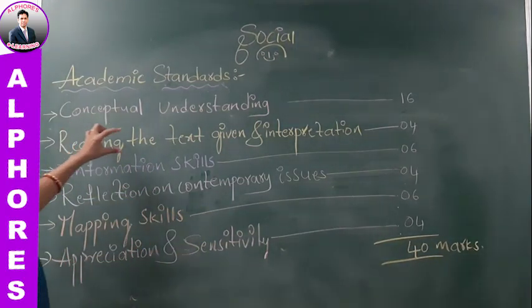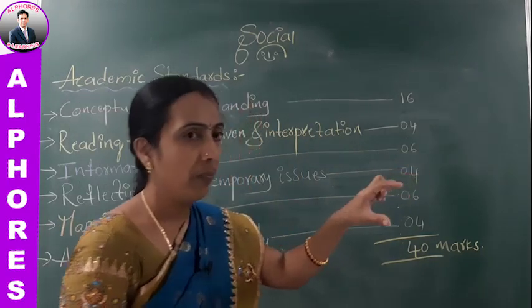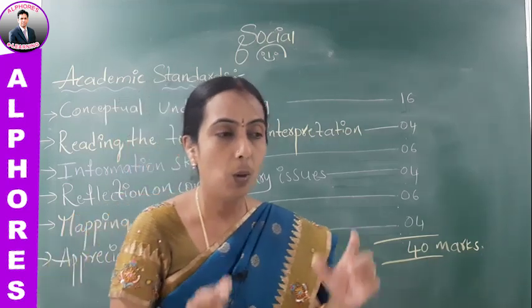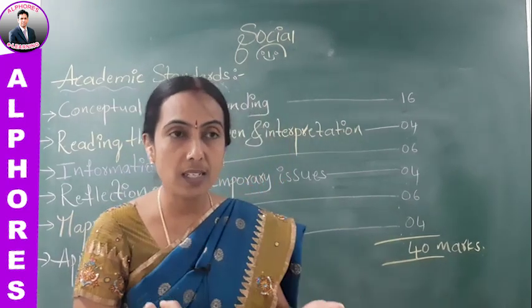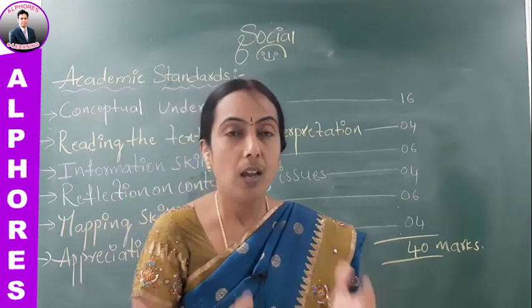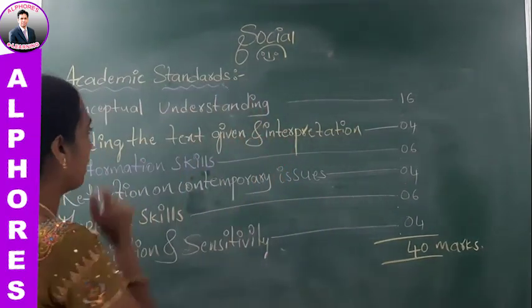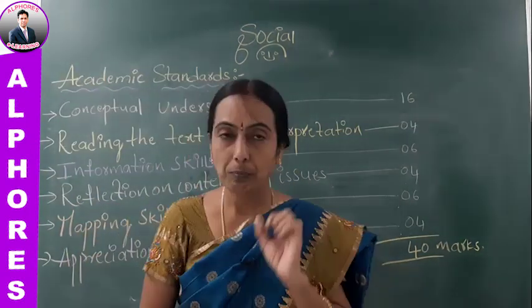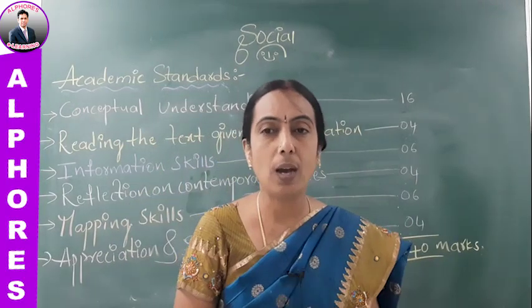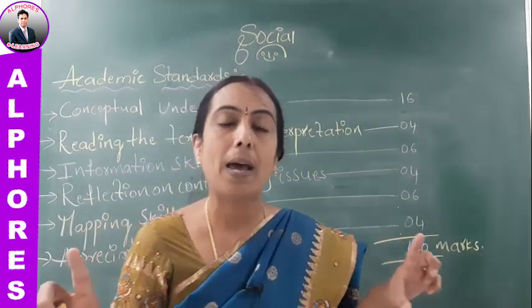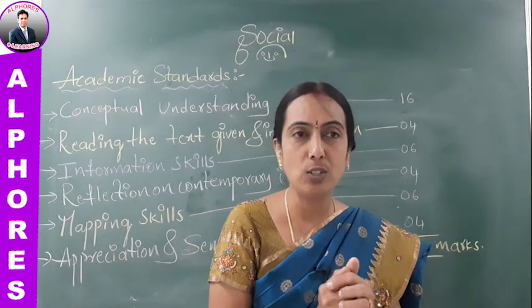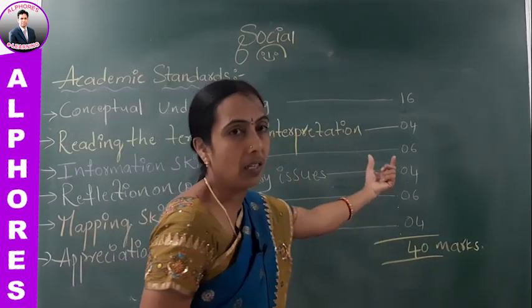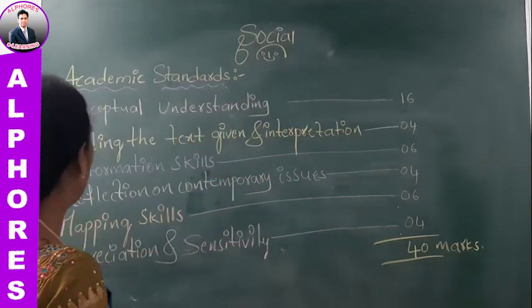AS2 is reading the text given and interpretation. In this category, an open-ended paragraph will be given to you and the question asks you to interpret, analyze, or express your opinion. This is a four-marks category. AS3 is information skills — some information will be given either in tabular form or paragraph form, and below the information, questions will be asked. This accounts for six marks in your question paper.